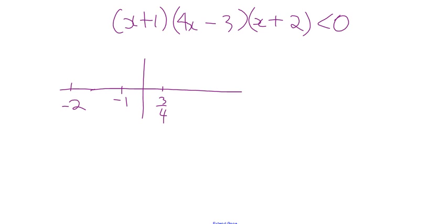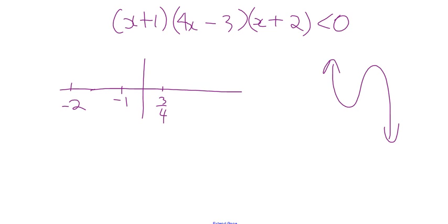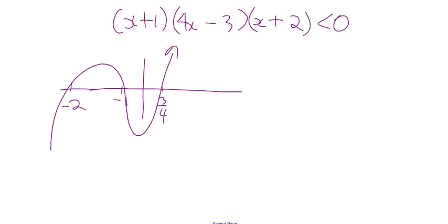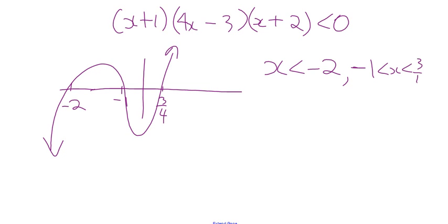It's a cubic with a positive leading term, so it has this shape. We're interested in where it's less than zero. The zeros are x = −2, x = −1, and x = 3/4. So the solution is: x < −2, and −1 < x < 3/4. You could graph this on a number line as well, using open dots since it's strictly less than zero.